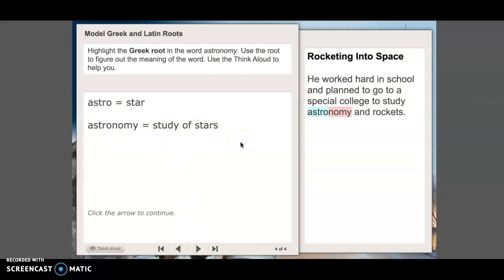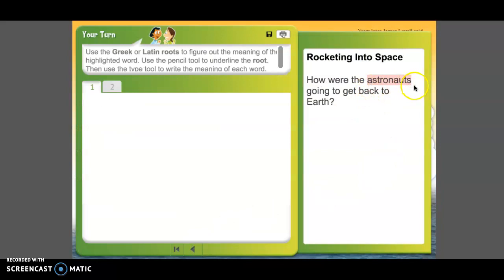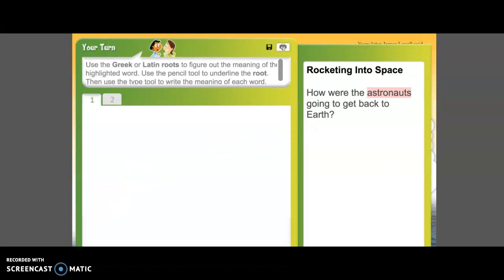Here we have astronauts. Do you remember what astro means? All right. So we know that astro is star. So let me type that. Astro is star. But what about naut? So astro is a star sailor. But we just call it a person that flies into space. Now let's move on to the next one.